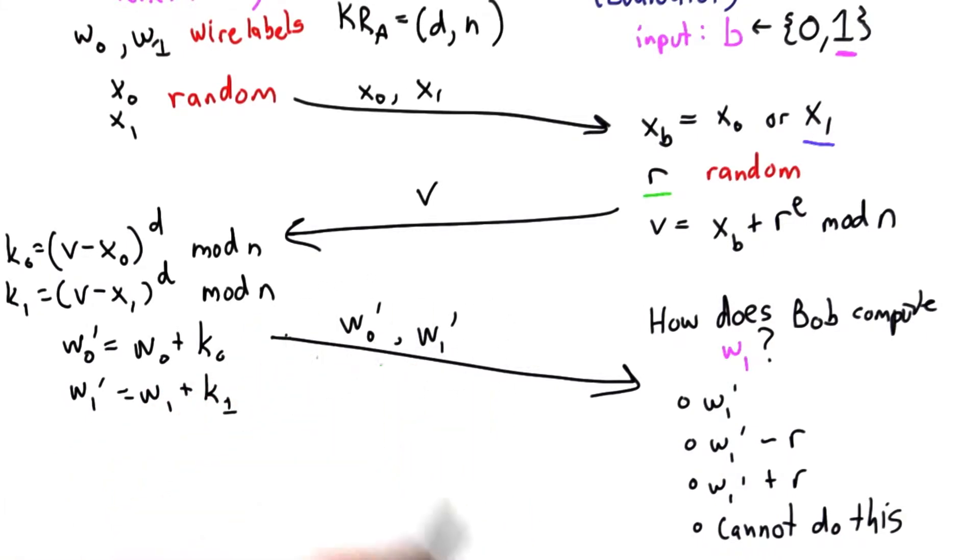Bob has received these two values, and k1 equals r because that was the one Bob sent back here.